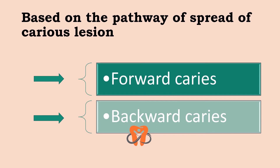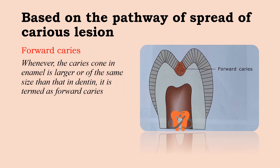Based on the pathway of spread, we have forward caries and backward caries. When the caries cone in the enamel is larger than or the same size as that in dentine, it is termed forward caries. You can see the caries cone in the enamel is larger than that in dentine — meaning the lesion in enamel is bigger than that in dentine.